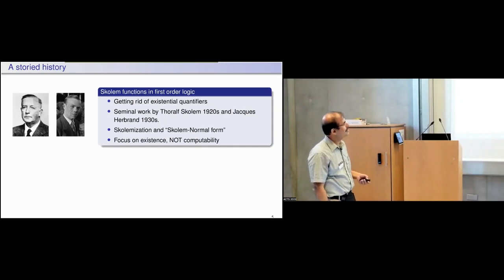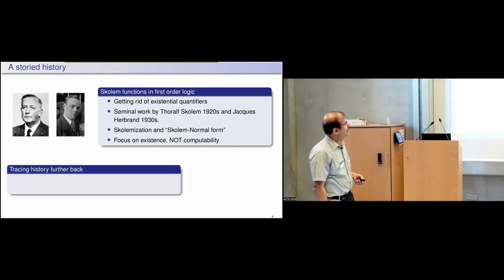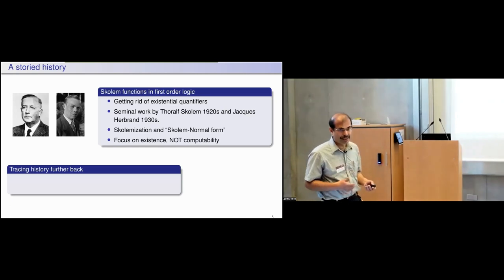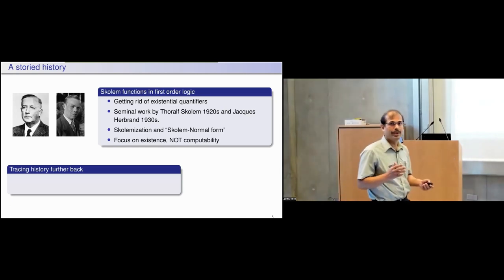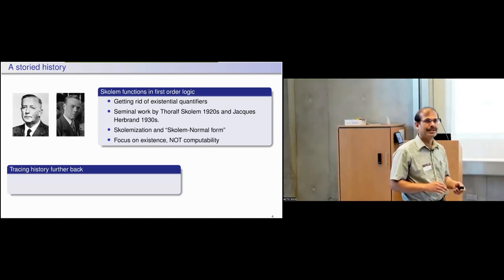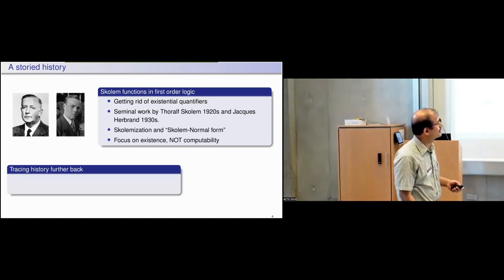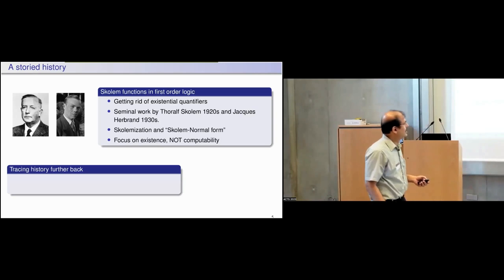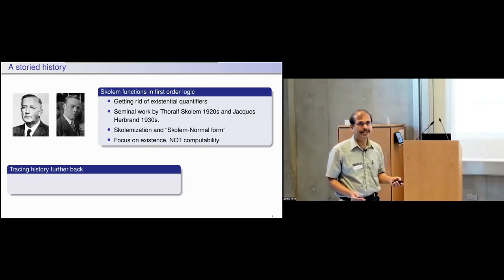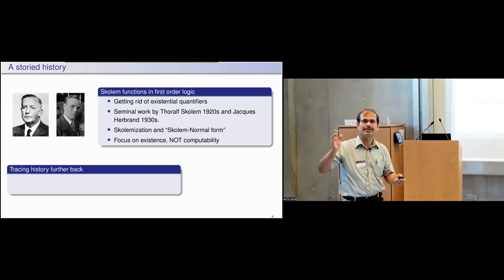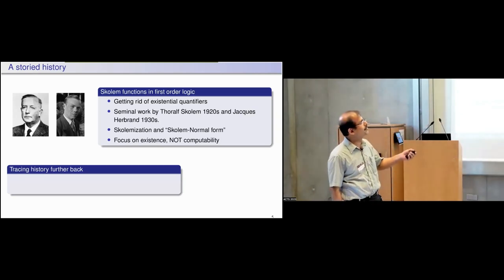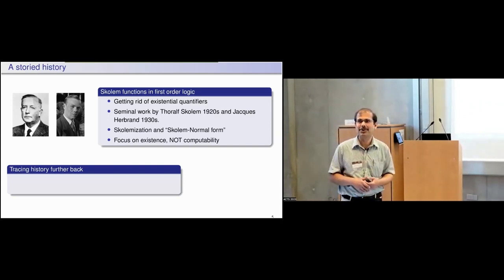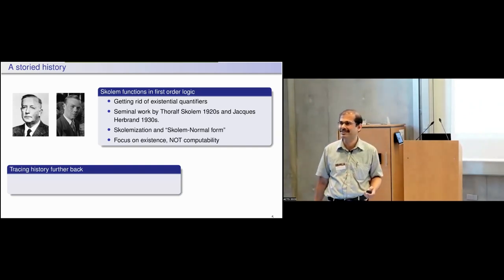This scenario is very nuanced. It could be the case that we know there is a Turing machine which computes this Skolem function, but there may not be any algorithm to get that Turing machine — there is no Turing machine which outputs that Turing machine. It is a very nuanced landscape.